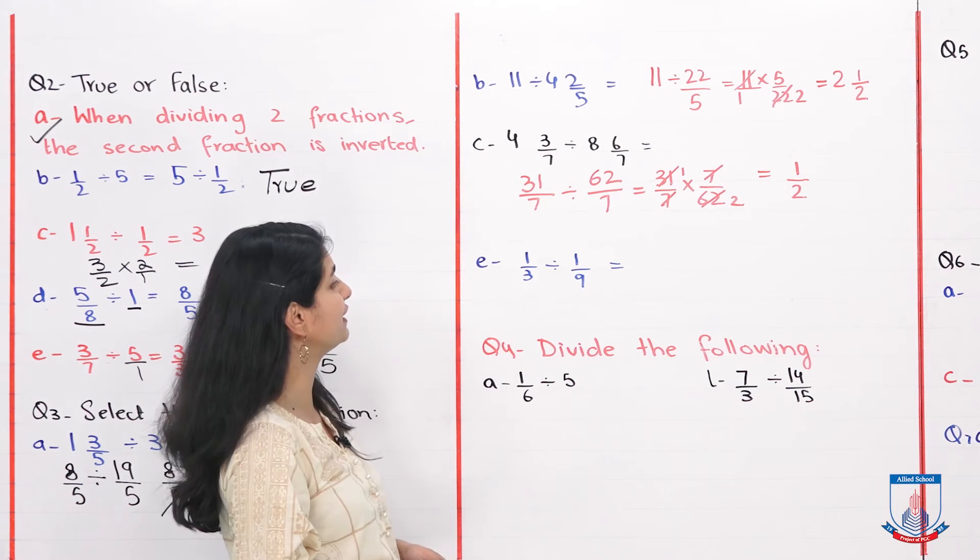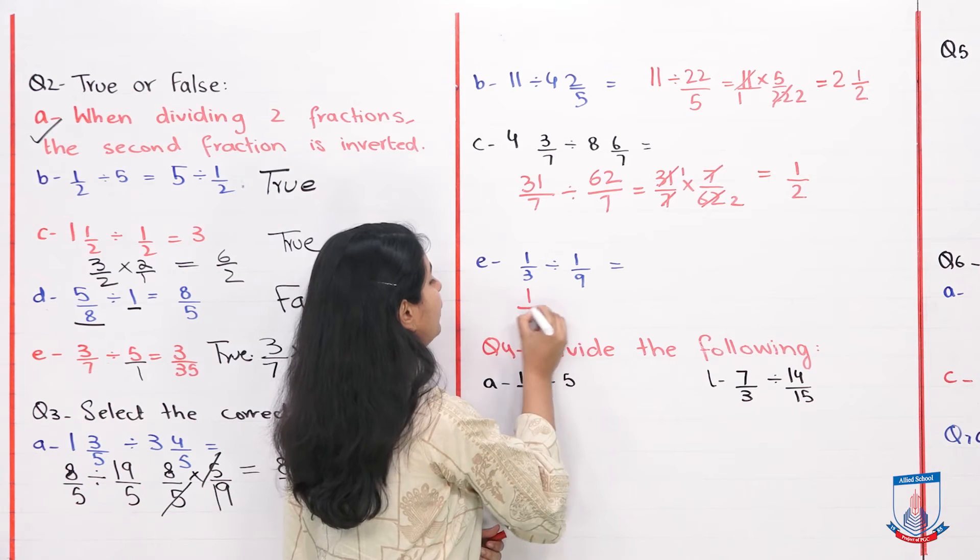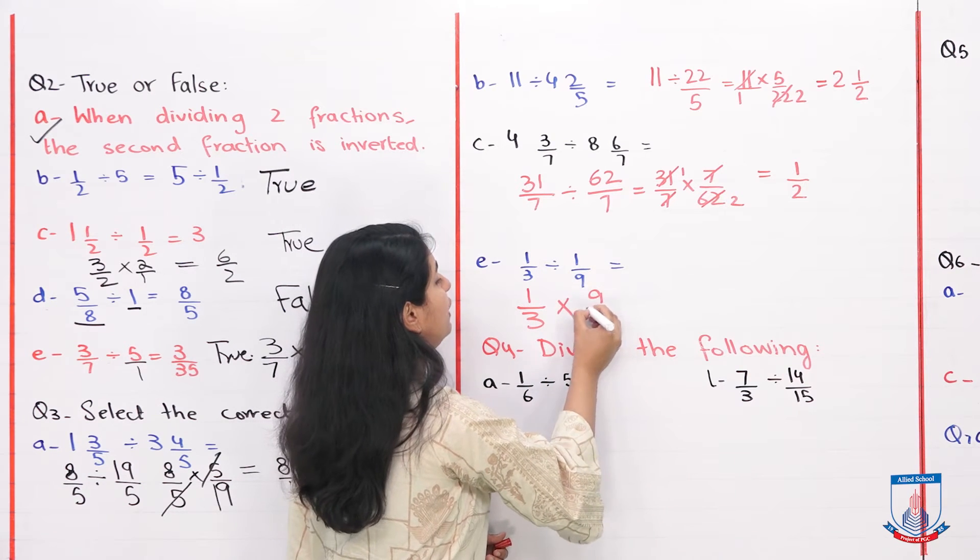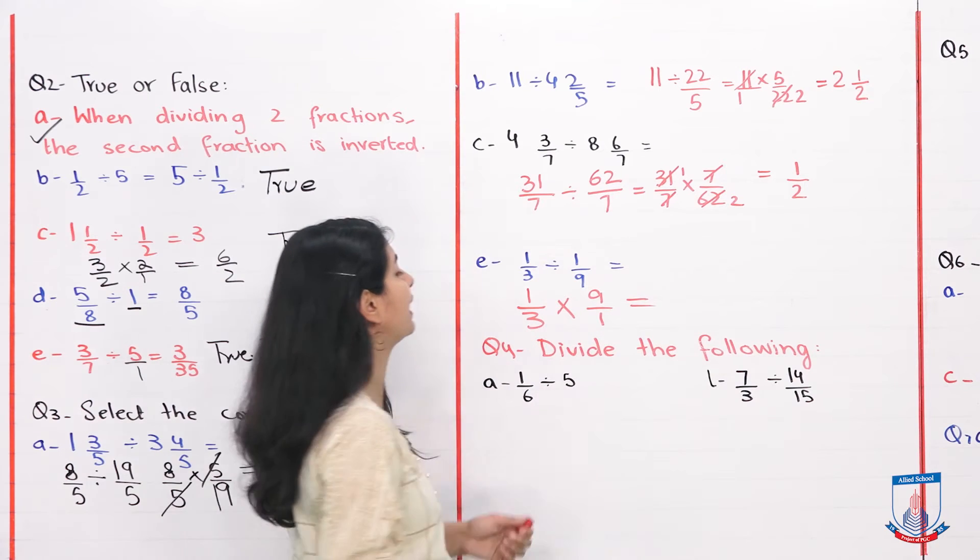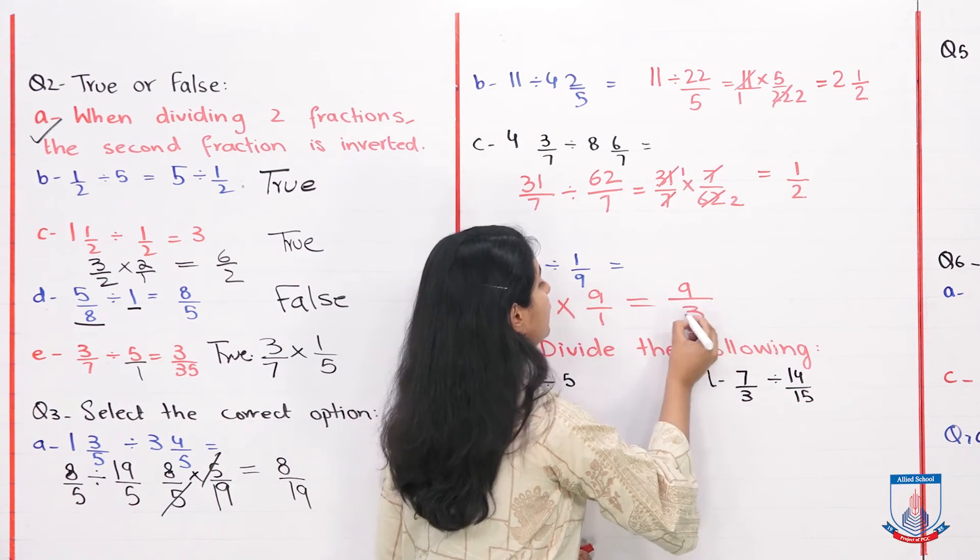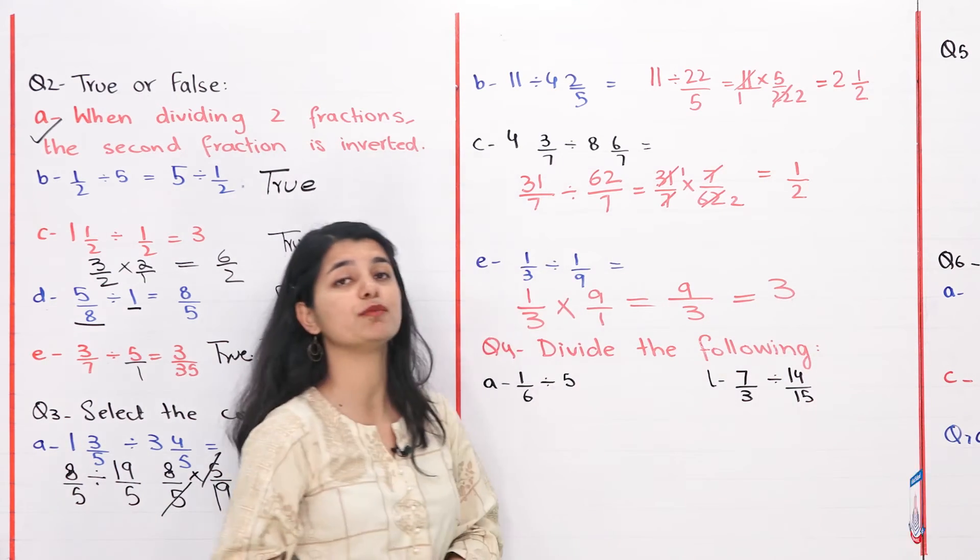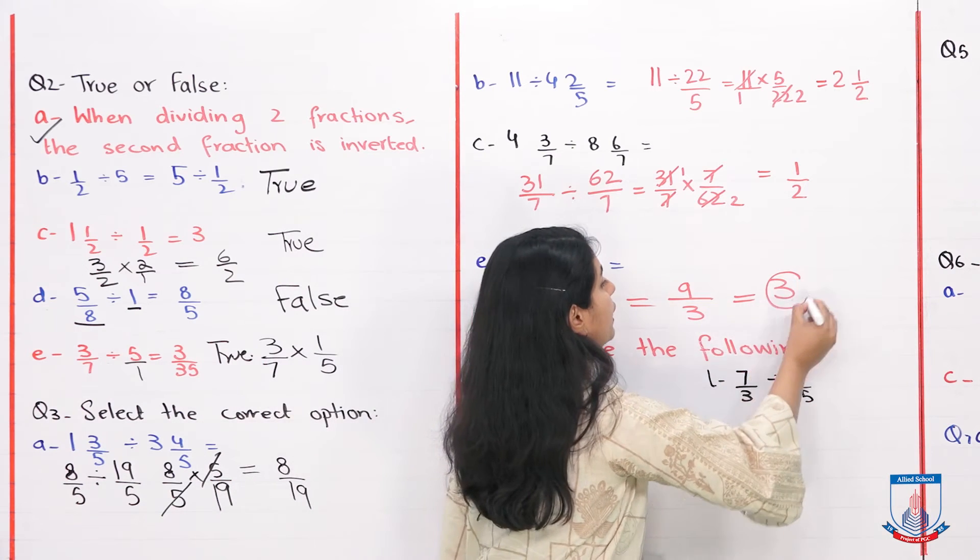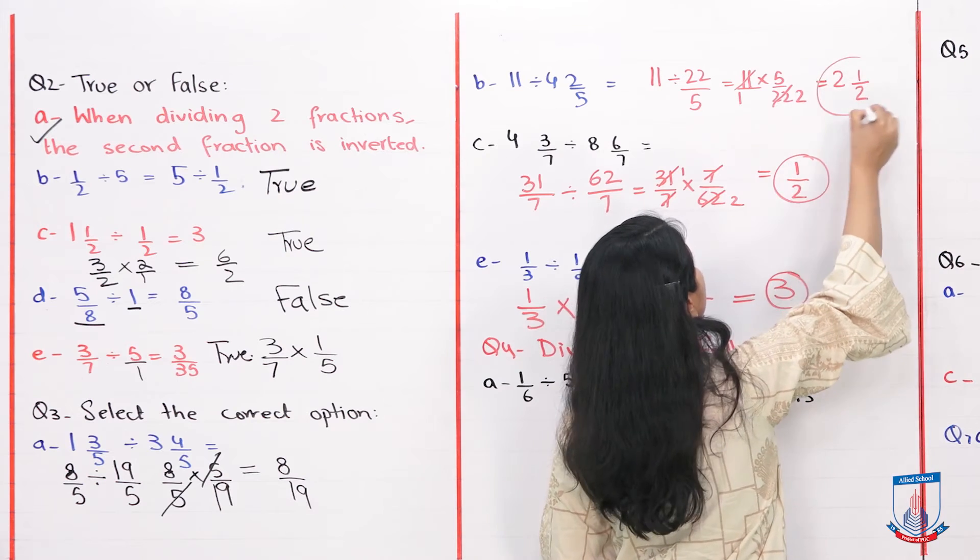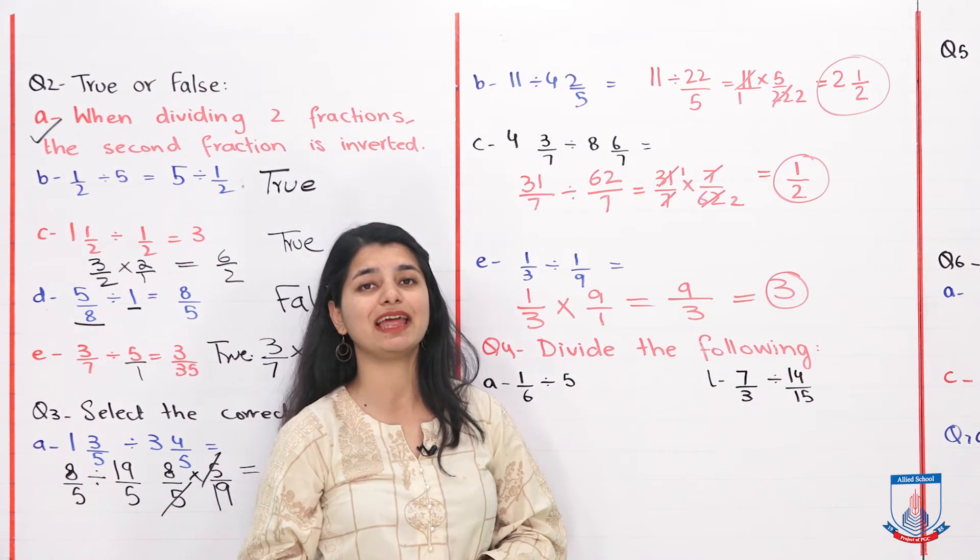Next part is part E: 1 over 3 divided by 1 over 9. Very easy. 1 over 3, we multiply by the inverse, 9 over 1. What answer comes? 1 into 9 is 9 over 3. 9 over 3 is 3. 9 divided by 3 is 3, so your correct option is 3. Here your correct option is 1 by 2, and here your correct option is 2 whole 1 by 2. This way you select the options.